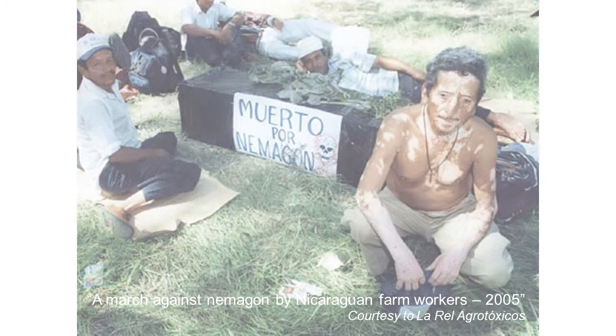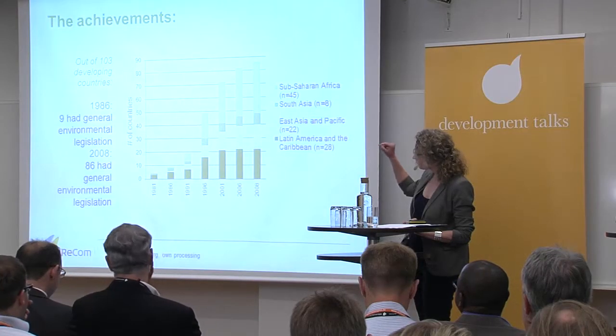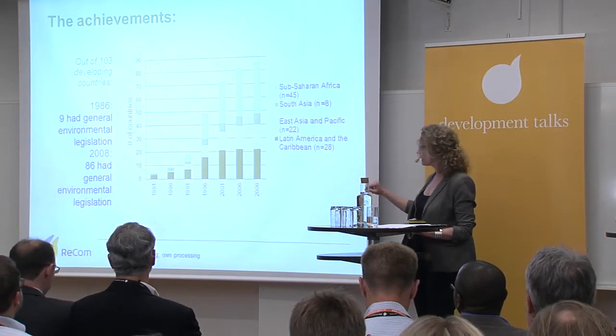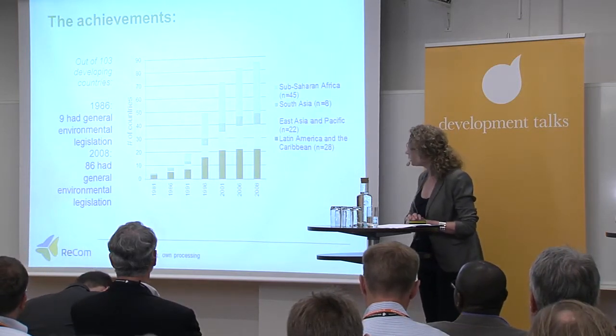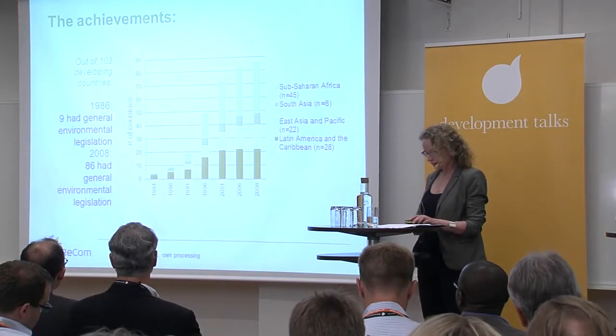The next slide is more positive. It shows that actually, if we look back in time, a lot of things have happened. There is a database called ECOLEC, which collects environmental legislation, environmental institution building, environmental decrees, and environmental court decisions. We have compiled the number of countries that have general environmental legislation. Out of 103 developing countries in 1986, there were not very many with environmental legislation. It gained pace after the publication of the Brundtland Report in 1986, and then really gained pace after 1992 with the Rio Conference.